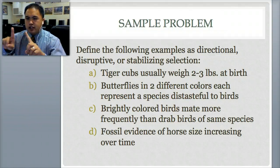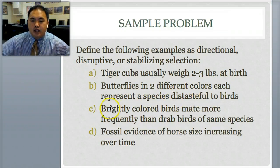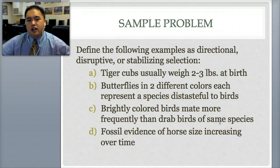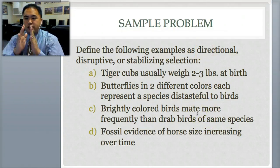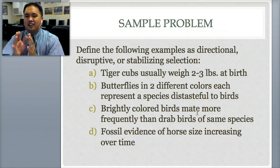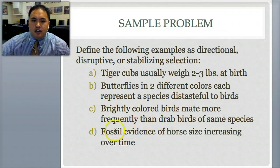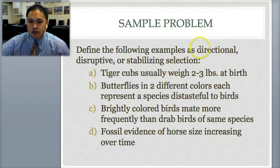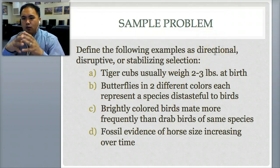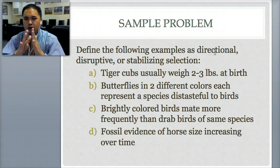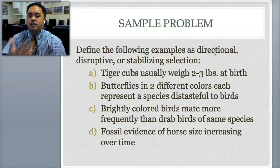Brightly colored birds mate more frequently than drab birds of the same species. That is directional — birds that were once average color are now shifting towards brightness. There's a clear direction. Fossil evidence of horse size increasing over time is also directional — horses had a wide range of sizes, but now all are shifting towards large. That is directional selection.